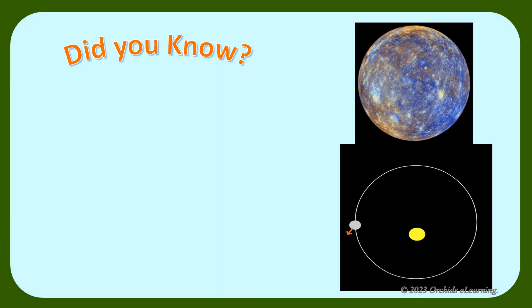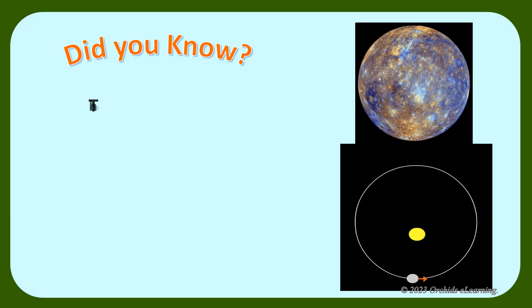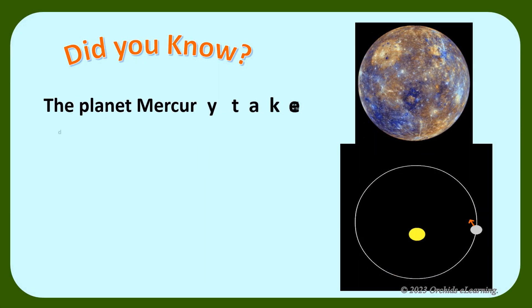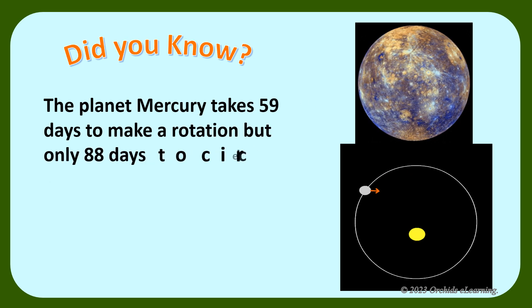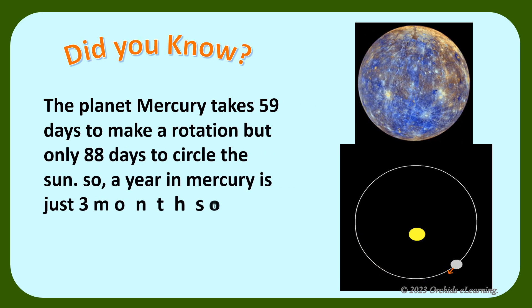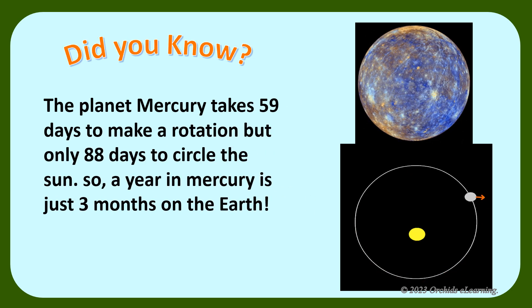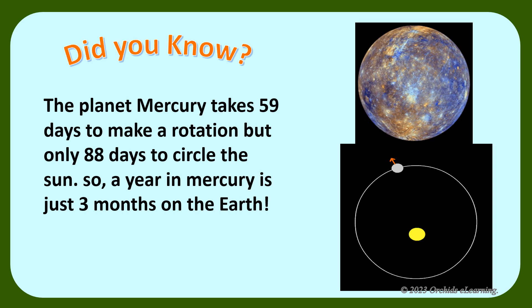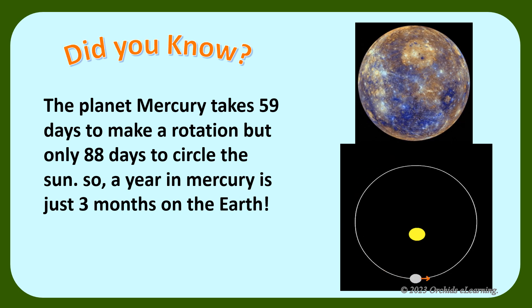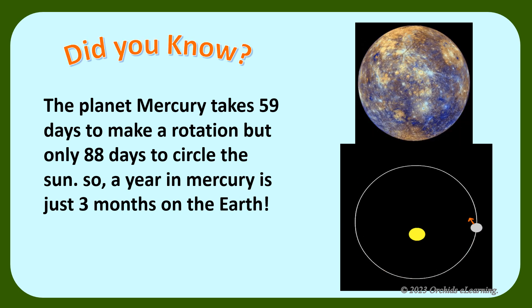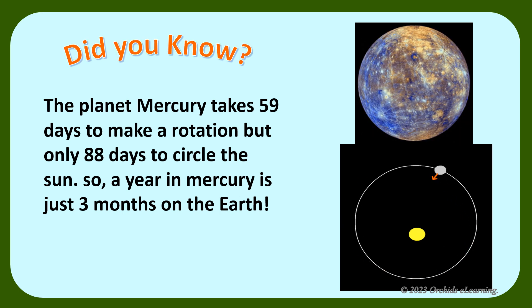The planet Mercury takes 59 days to make a rotation, but only 88 days to circle the Sun. So, a year in Mercury is just 3 months on the Earth.